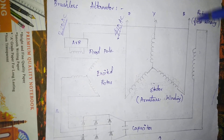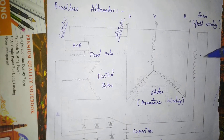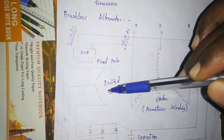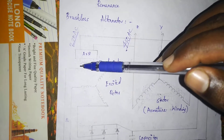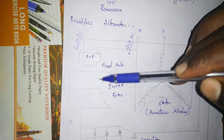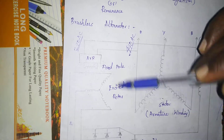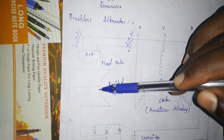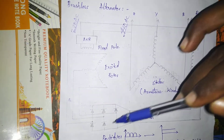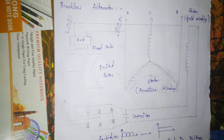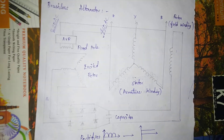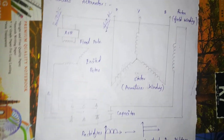The field exciter and the main generator are on the same shaft. We supply constant DC, which creates a constant DC magnetic field for the rotor armature — that's why current is induced. We use a bridge rectifier to convert the AC output to DC.